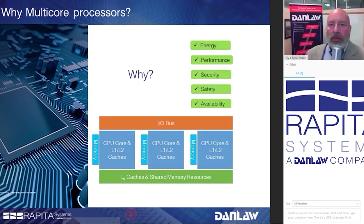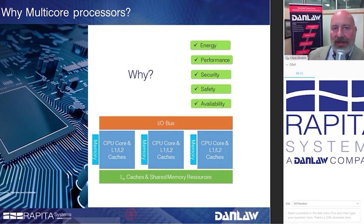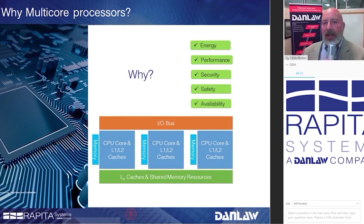The obvious benefits of multi-core processors include lower power consumption, increased processing speeds, and increased performance due to concurrent processing on the cores. Additional benefits include data security by providing firewalls and memory protection, isolated critical safety functions or ASILs with respect to other functions, and decreased pricing and increased availability as more of these processors come to market.